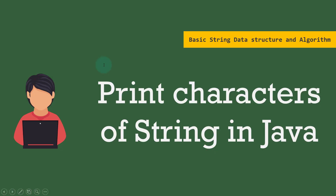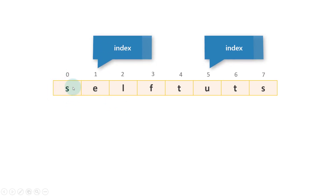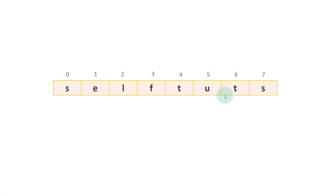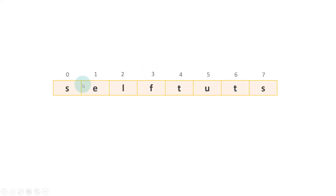If we look at the representation of this string in Java memory, an array-like structure is created and individual characters are placed inside these blocks. The first block at index 0 contains S, the second at index 1 has E, index 2 has L, index 3 has F, and so on for SelfDurts. This is an important mental model to have before tackling coding challenges — understanding how strings are stored in Java memory.